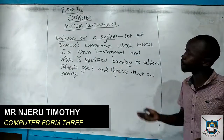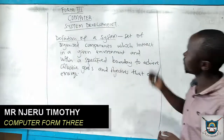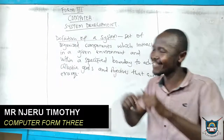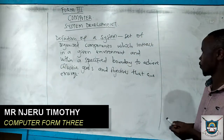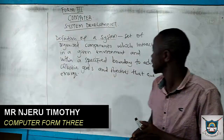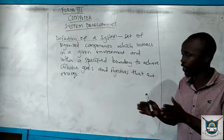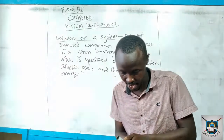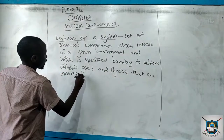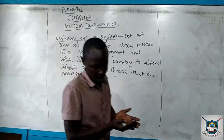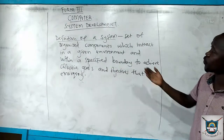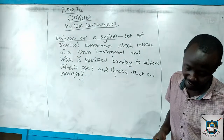We are going to see a lot of data systems. We have the definition of a system. A system uses a set of organized components — not only a set of organized components which interact in a given environment. We specify a boundary to achieve collective goals. So our system is made of components.